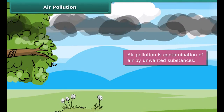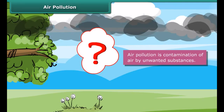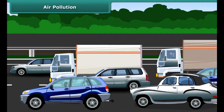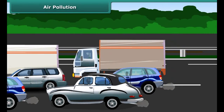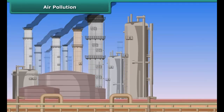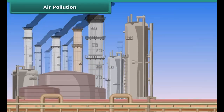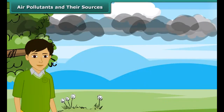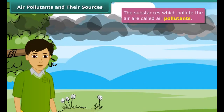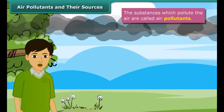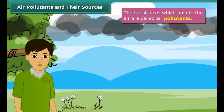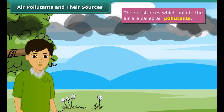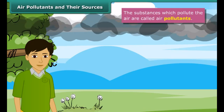Now you would like to know from where these substances come. These are released when fuels burn in vehicles, or when factories and power plants produce them as gaseous wastes. The toxic gases like carbon dioxide, sulfur dioxide, nitrogen dioxide, and carbon monoxide pollute the air.